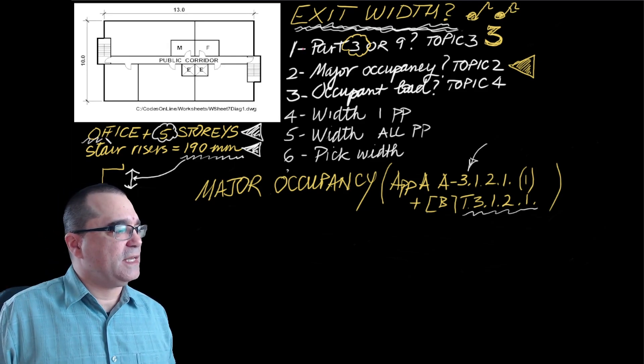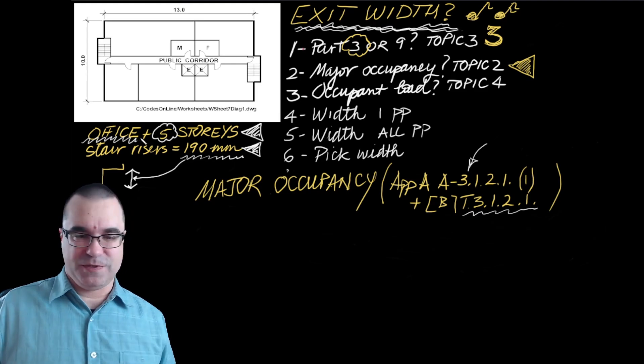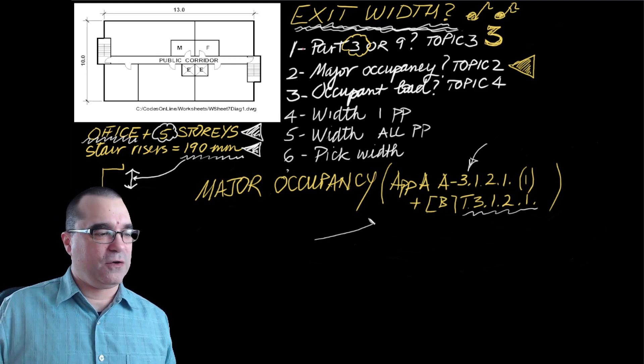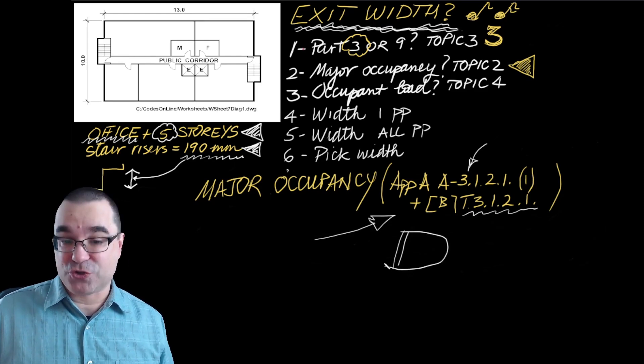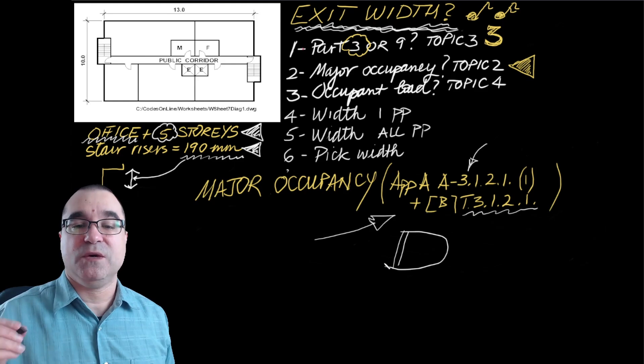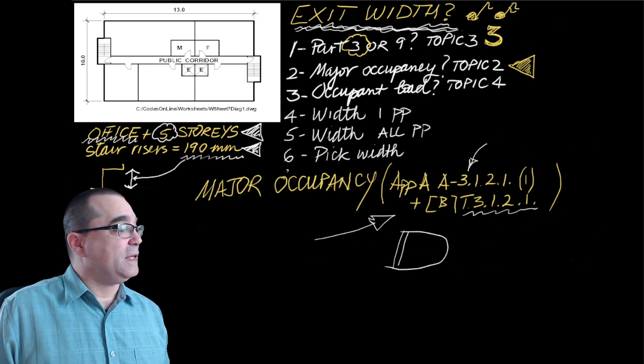Well, this is a building that's identified as an office building. And from our references right here, we find that that's a D major occupancy. Great. We can now move on to step number three.